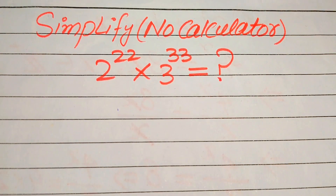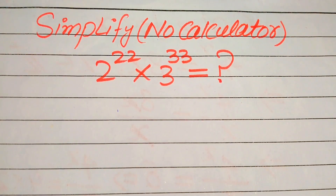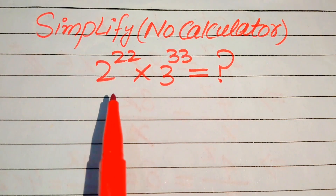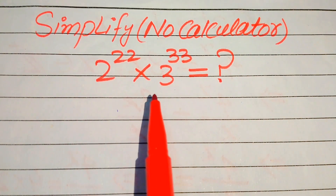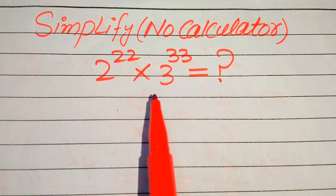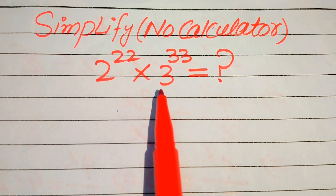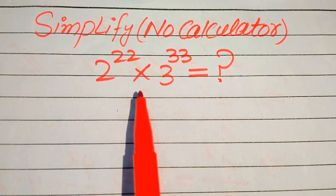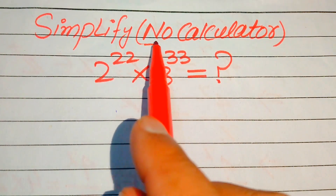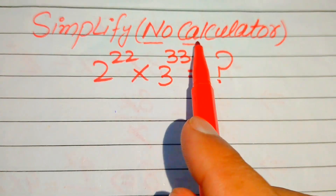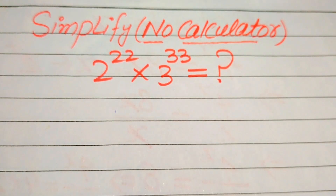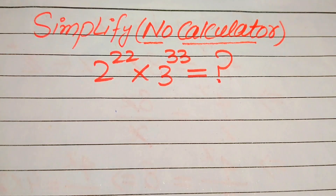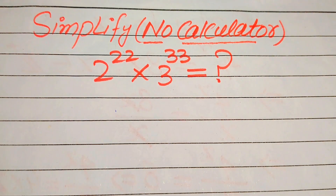Hello everyone. How to simplify this algebraic expression: 2 to the power of 22 multiplied by 3 to the power of 33. We need to simplify this expression, and remember that a calculator is not allowed in this problem, so we need to show all of the working on paper.